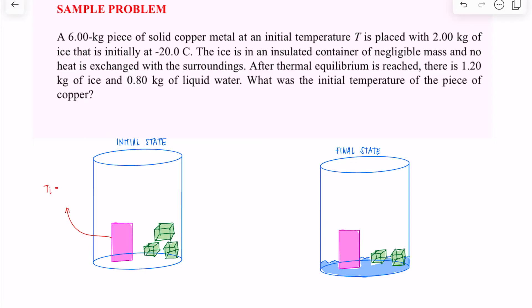Initially, the T-initial of the copper is at temperature T, and that must be greater than the temperature of the ice. The heat coming from the copper is actually being lost by the copper and is absorbed by the ice because there is a phase change involved. When you have a solid phase and need it to transform to liquid phase, that happens at the expense of the addition of heat — not necessarily a change in temperature, but simply the addition of heat.